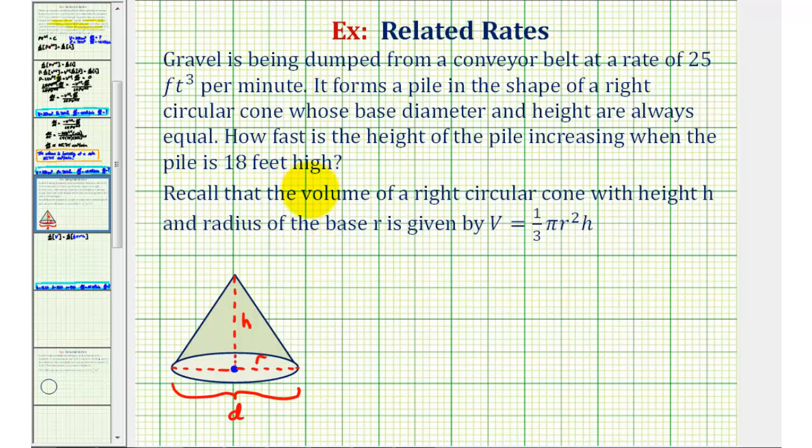Let's start by recording all the given information. Notice how the volume of the cone would be increasing at a rate of 25 cubic feet per minute, which means dV/dt, or the change in V with respect to time, is equal to 25 cubic feet per minute.